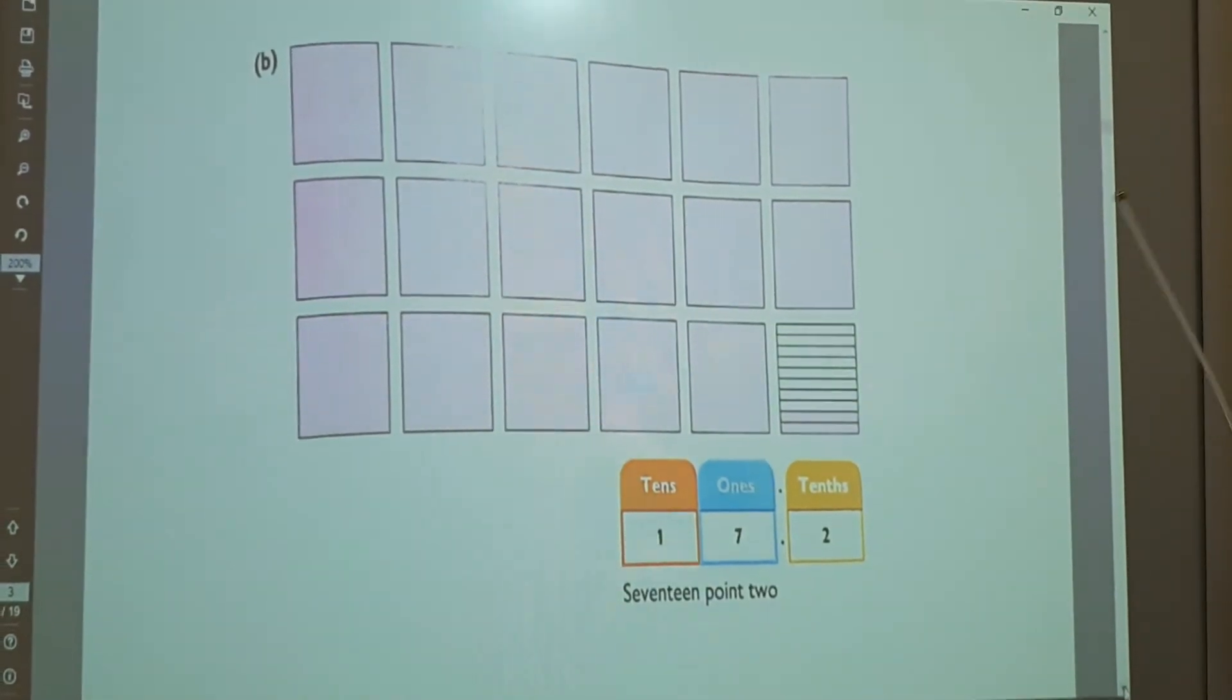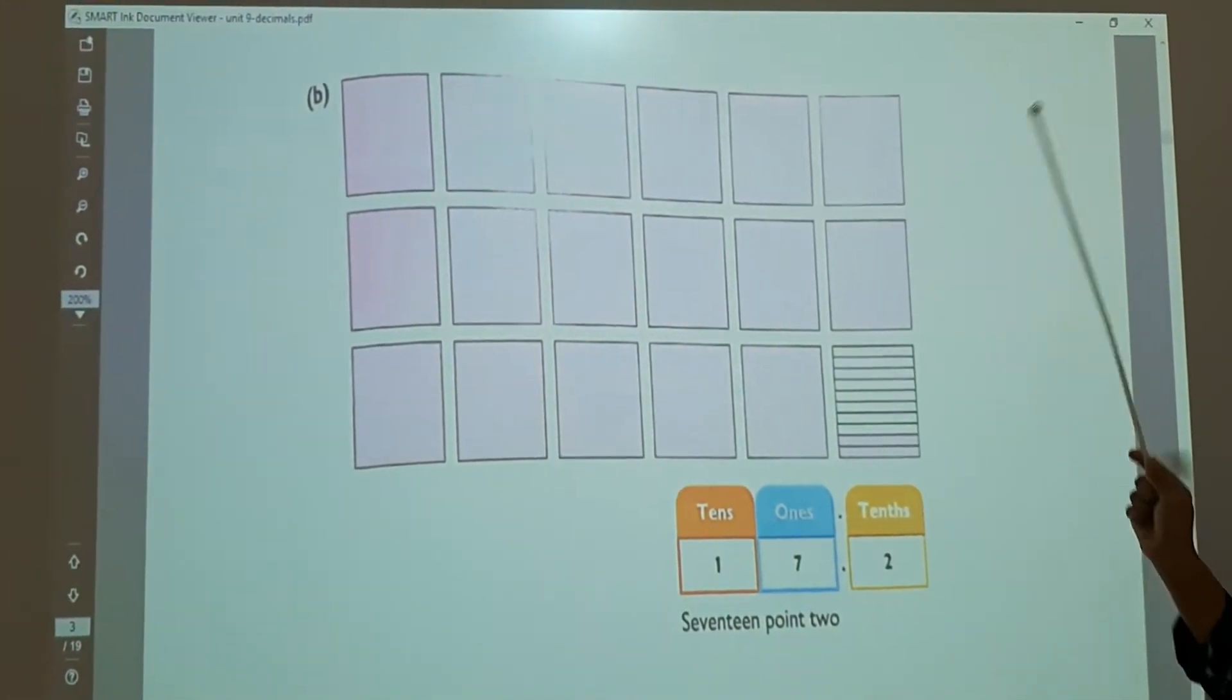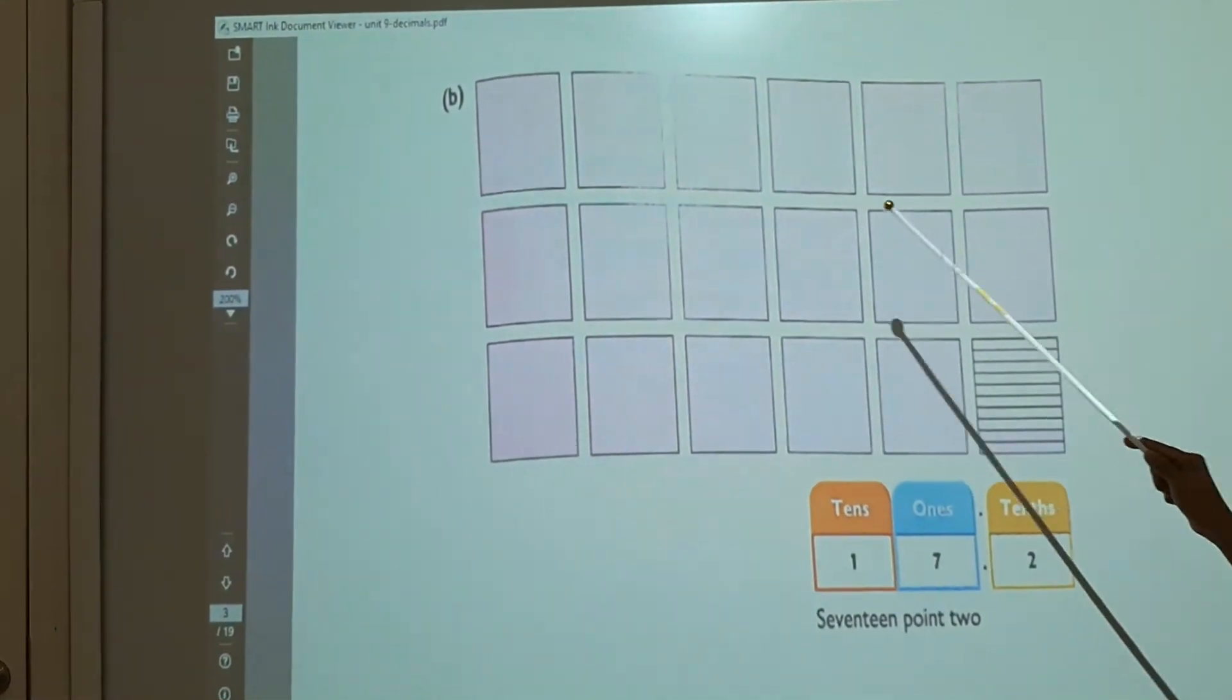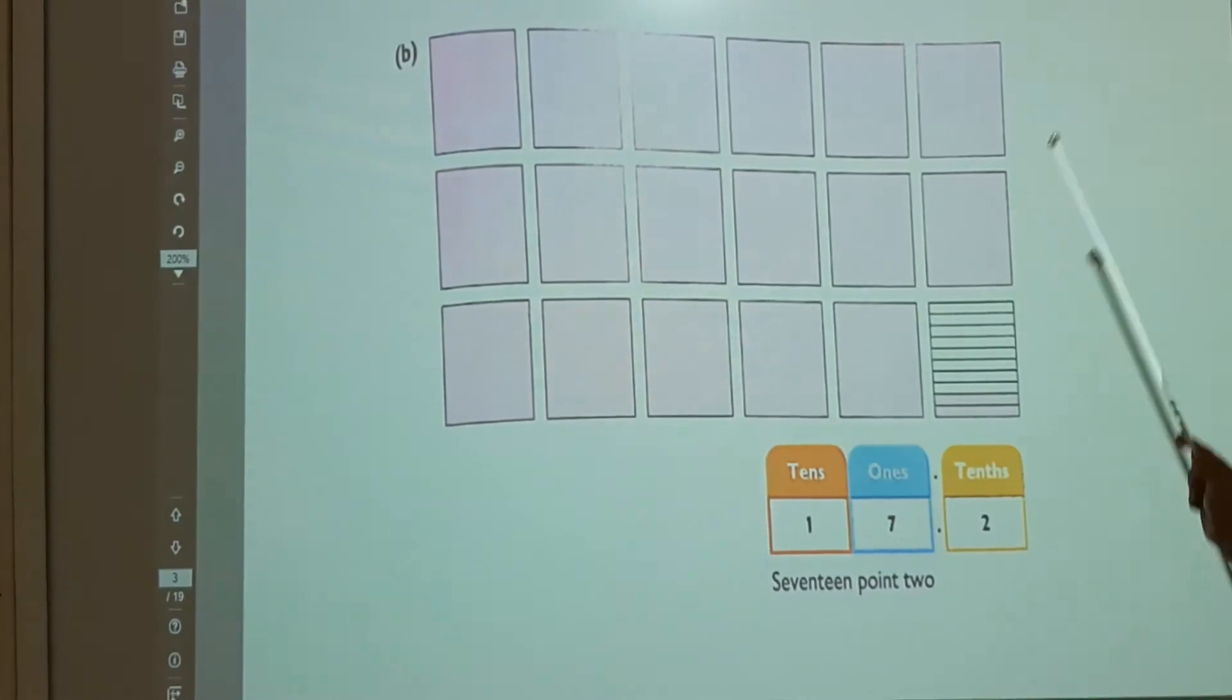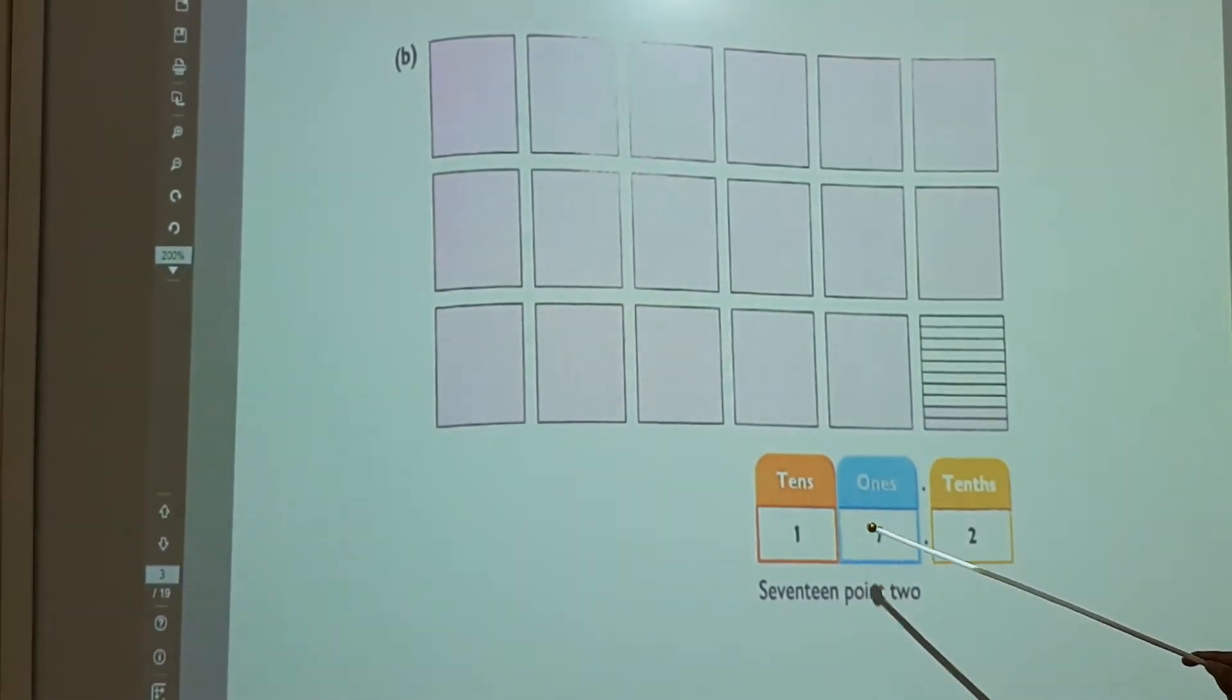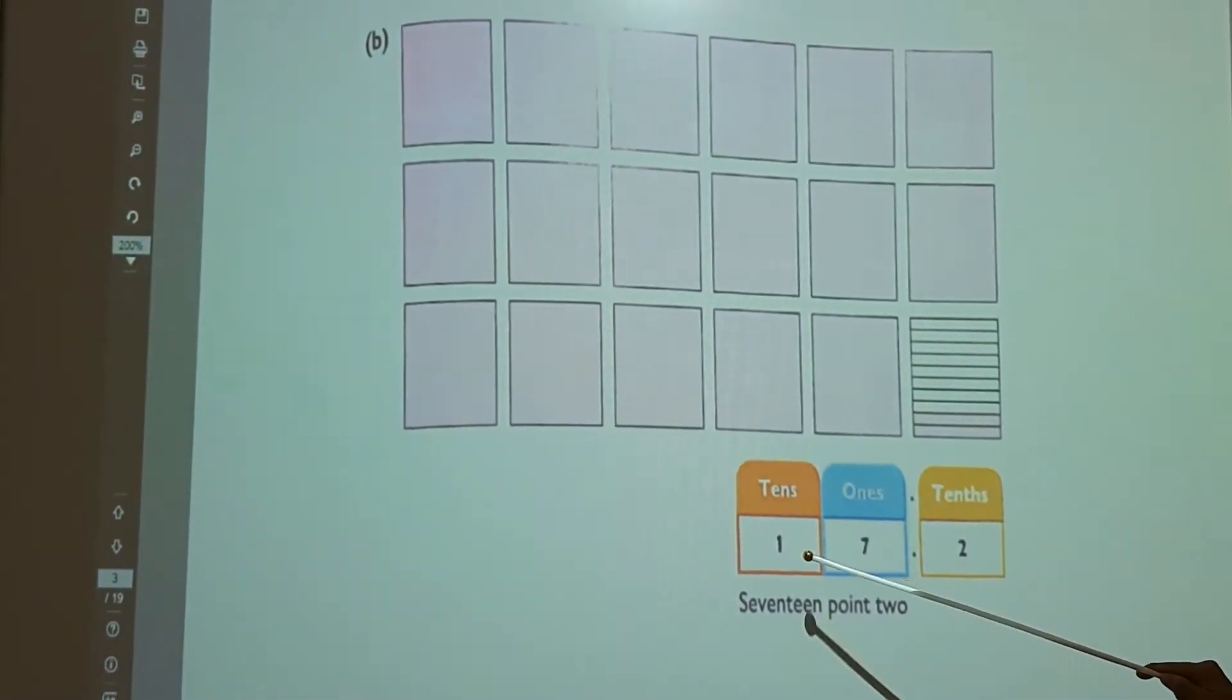Let us have a look into this example. See, how many whole numbers or how many full boxes you can see here? 1, 2, 3, 4, 5, 6, 7, 8, 9, 10, 11, 12, 13, 14, 15, 16, 17. That is 17 full boxes, whole numbers, full thing. So I am writing, I see 17. Ones comes 7 and tens comes 1.